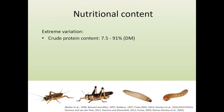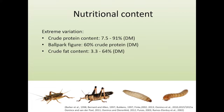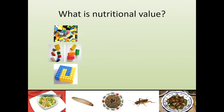The other major component in insects is fat, and again there's a very large variation. Crude fat content can be anywhere between 3.3 and 64 percent on a dry matter basis. A ballpark figure would be 20 to 30 percent crude fat, but this can differ quite a lot between species and also based on other elements which I'll discuss later.